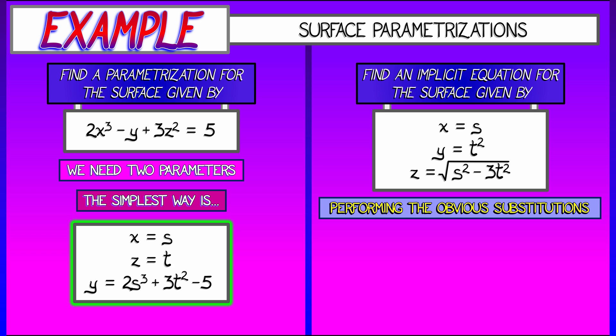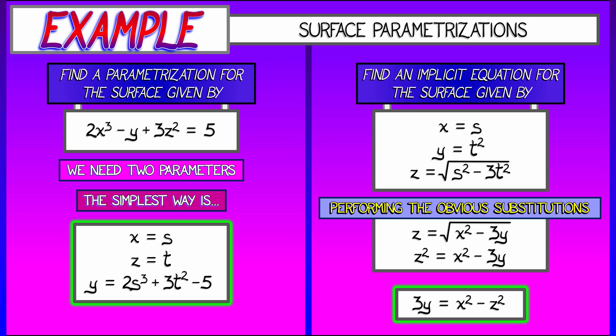And now, after those substitutions, I have an equation that involves x and y and z. I can simply say z equals the square root of x squared minus 3y. Maybe I want to square both sides of that and then rearrange the terms to get 3y equals x squared minus z squared.